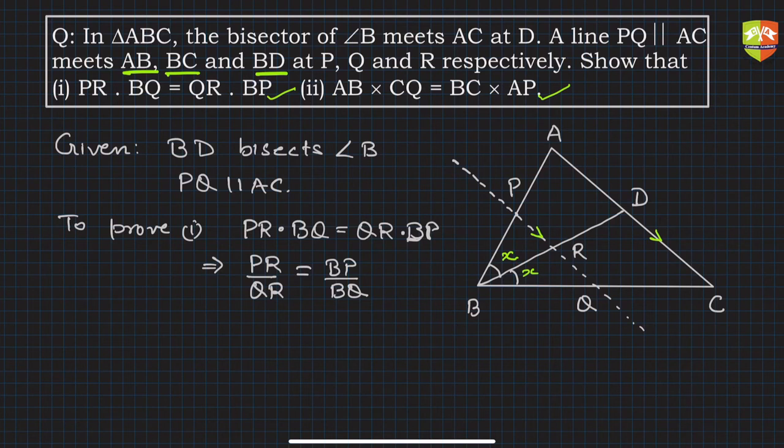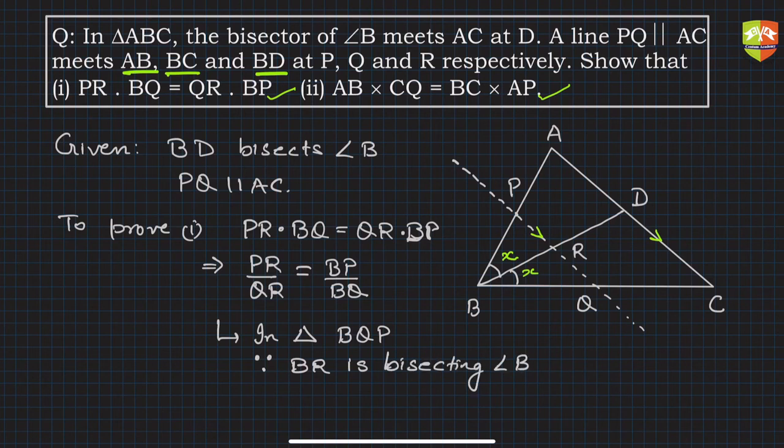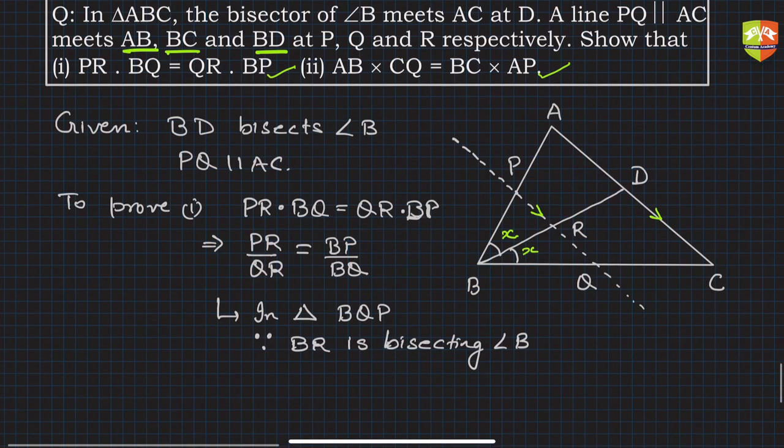Since BR is bisecting angle B in triangle BPQ (because R lies on BD), by the Internal Angle Bisector Theorem: